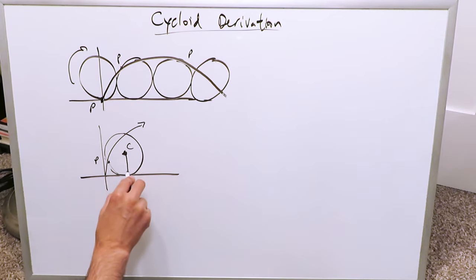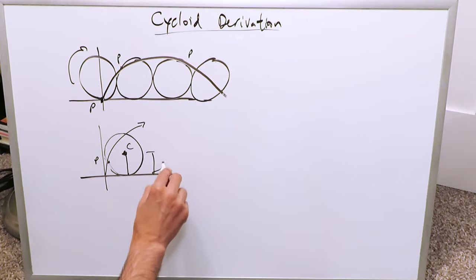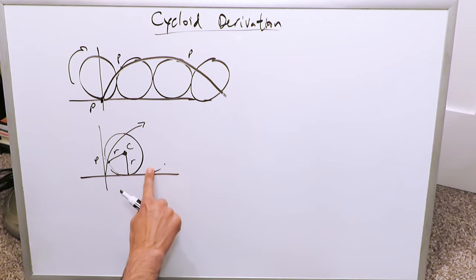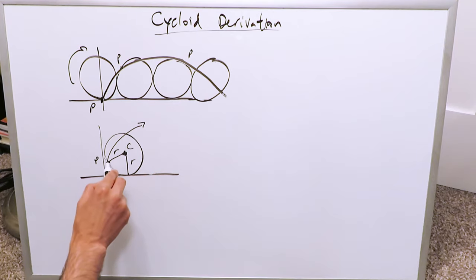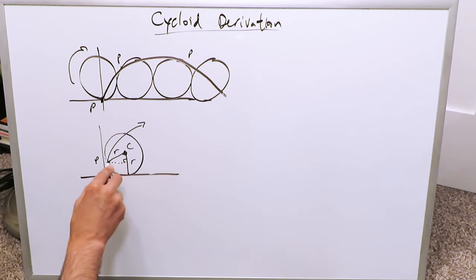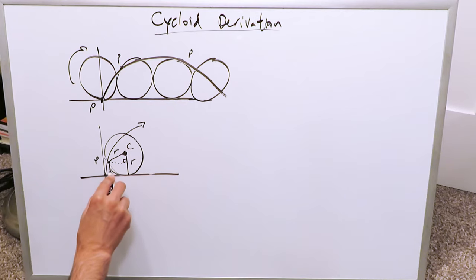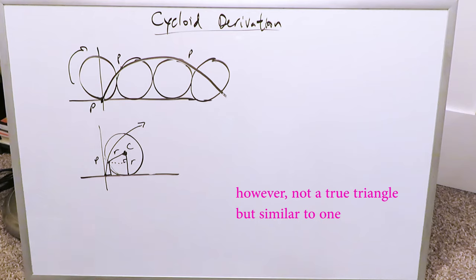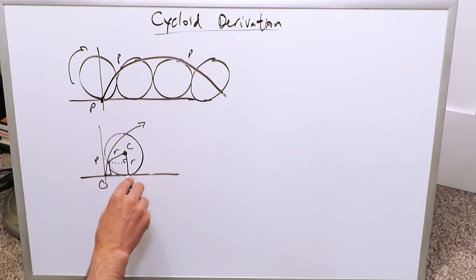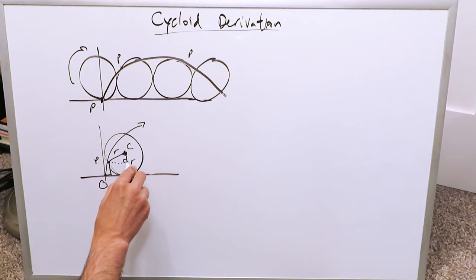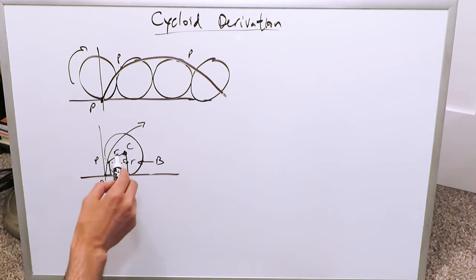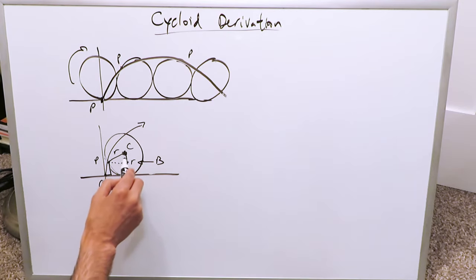Certain items can be generated that help us derive the parametric equations of the cycloid. We have a dimension here called r — the radius from the center to the circumference. I can generate a 90-degree angle here, and a triangle has been generated. From another point, I can generate a right triangle. We have a point on the origin called O, a point A, and an imaginary point B. We have a radius, a center of the circle, and a small angle of rotation theta.